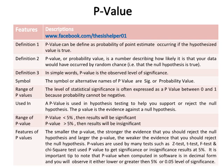The symbol or alternative names of p-value are 'sig' or 'probability value.' The level of statistical significance is often expressed as a p-value between 0 and 1 range, because probability cannot be negative. A p-value is used in hypothesis testing to help you support or reject the null hypothesis.